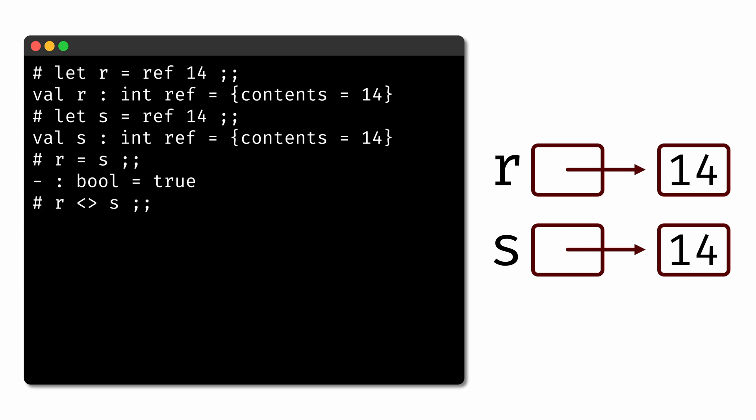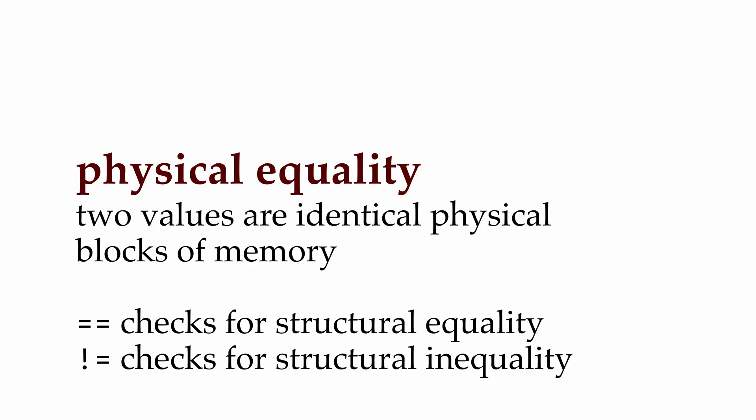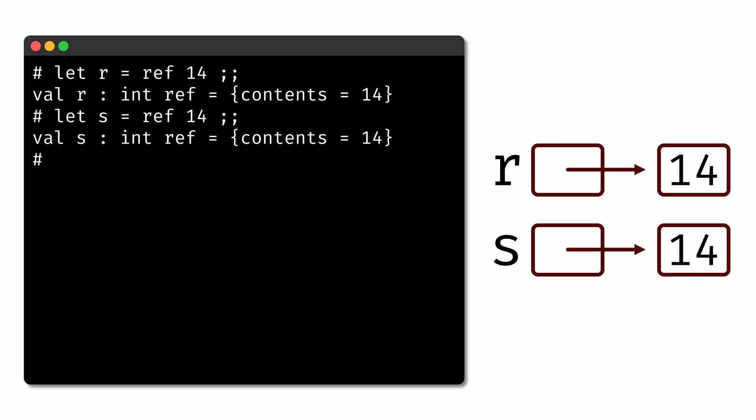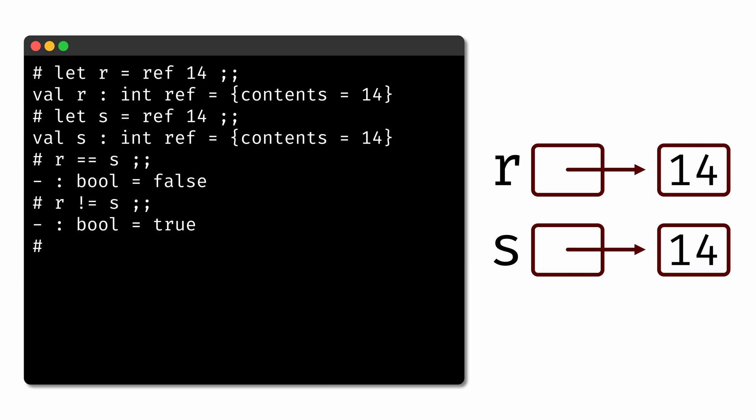There's also the two angled brackets, which checks for structural inequality. With the double equal sign, we can check for physical equality — are the two values identical physical blocks of memory? In this case, r and s are references to different blocks of memory, so they are not physically equal. And we also have an operator that checks for physical inequality as well.